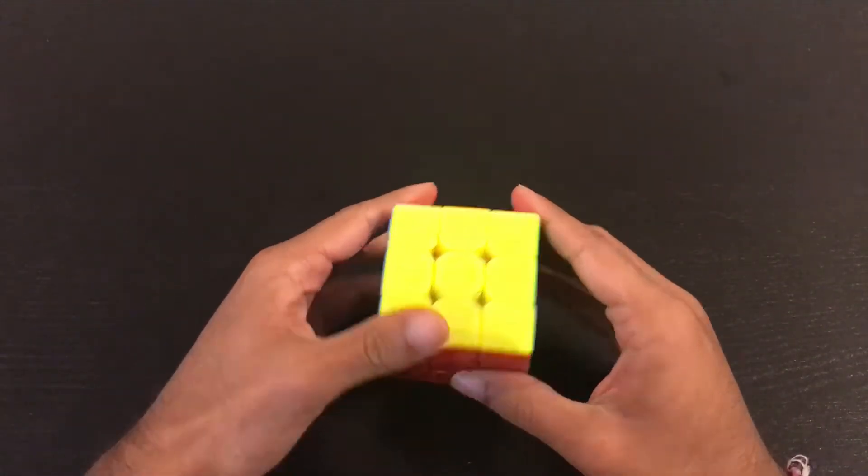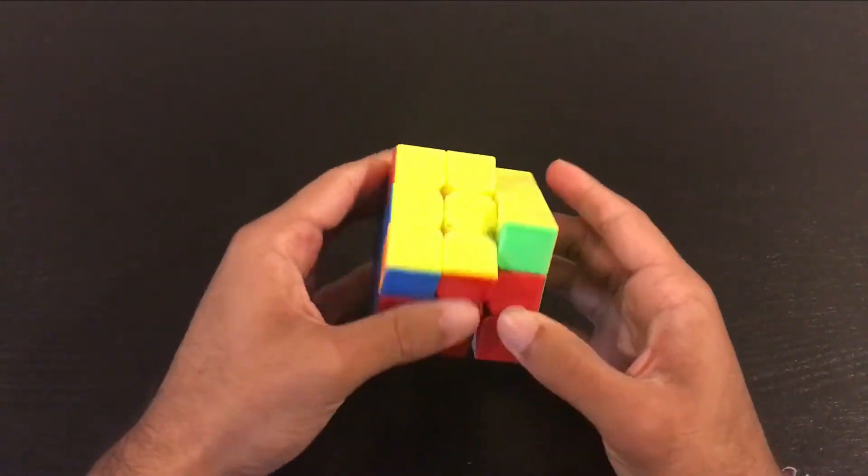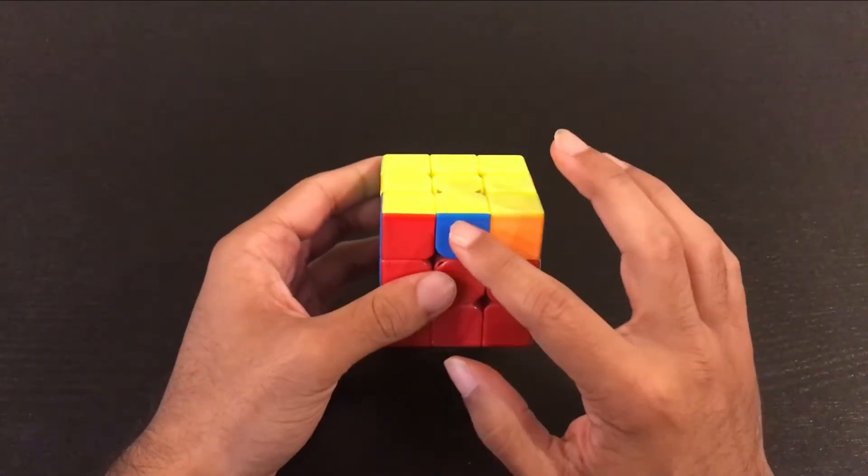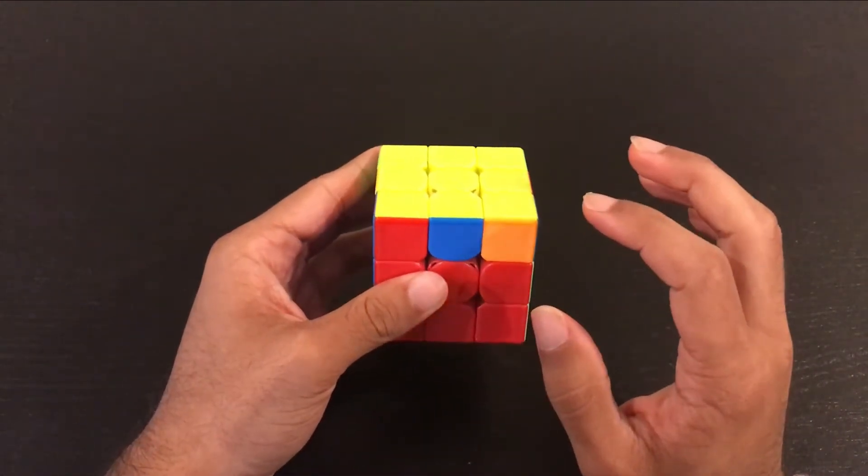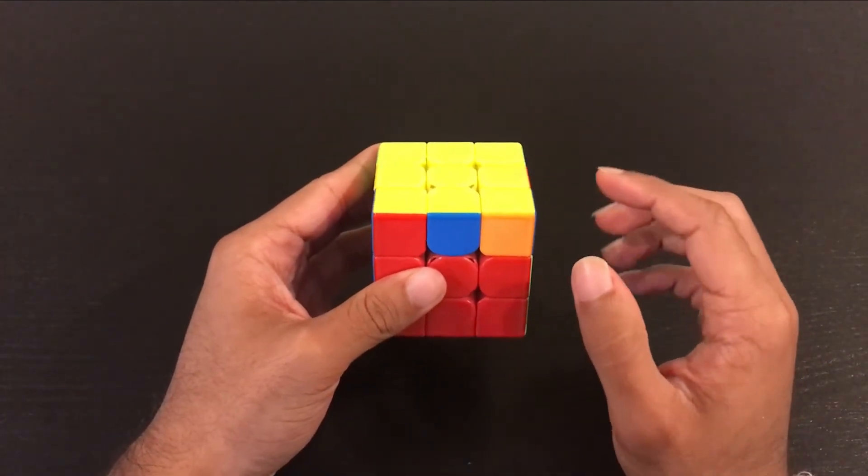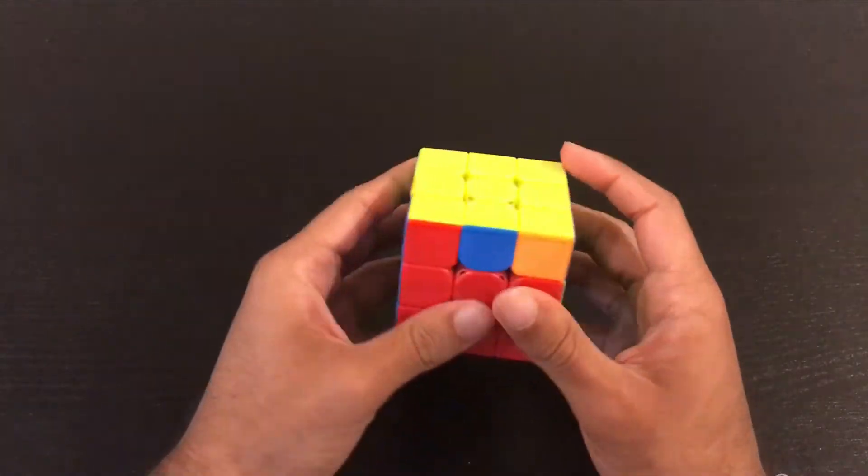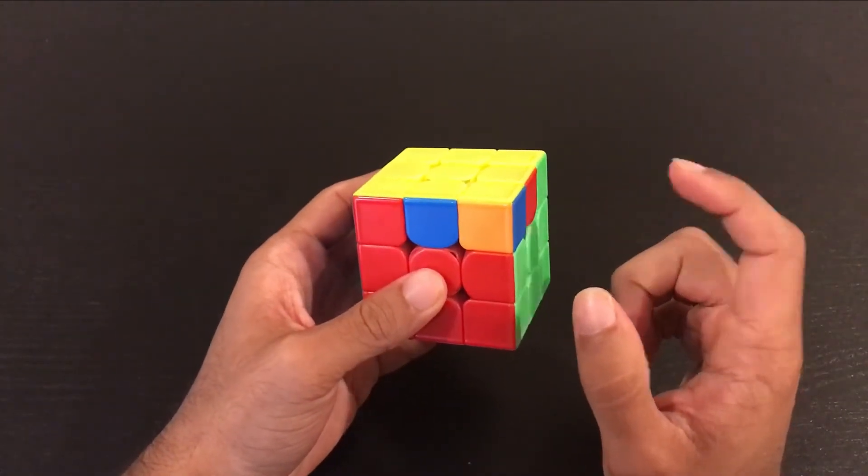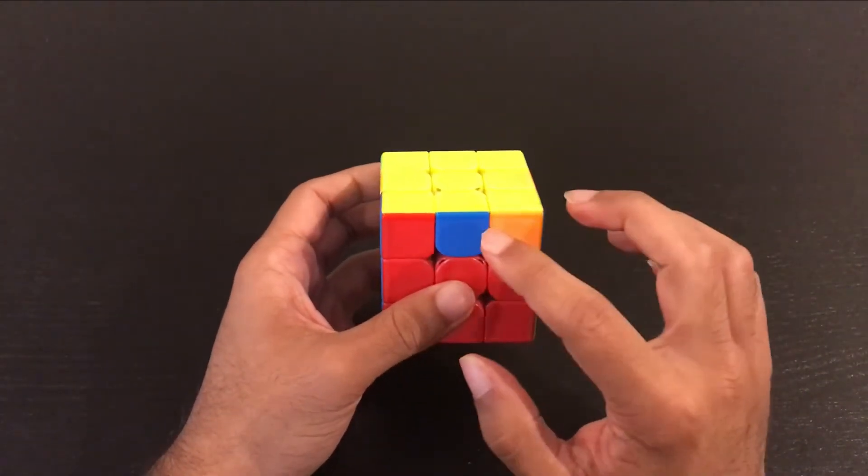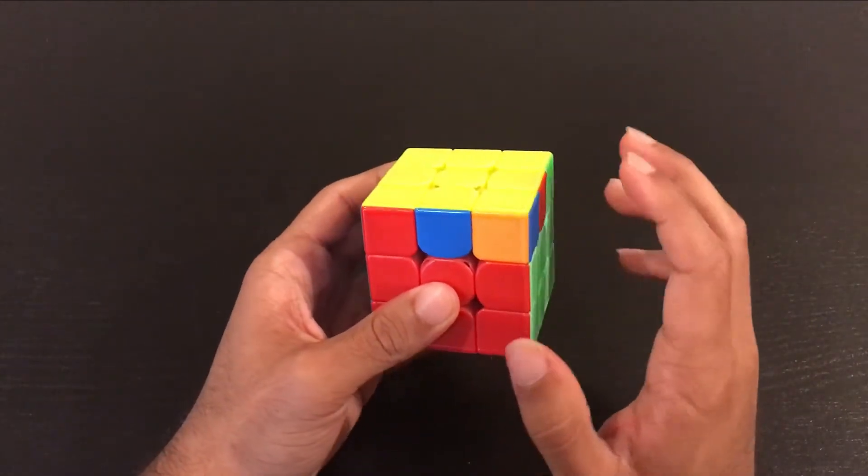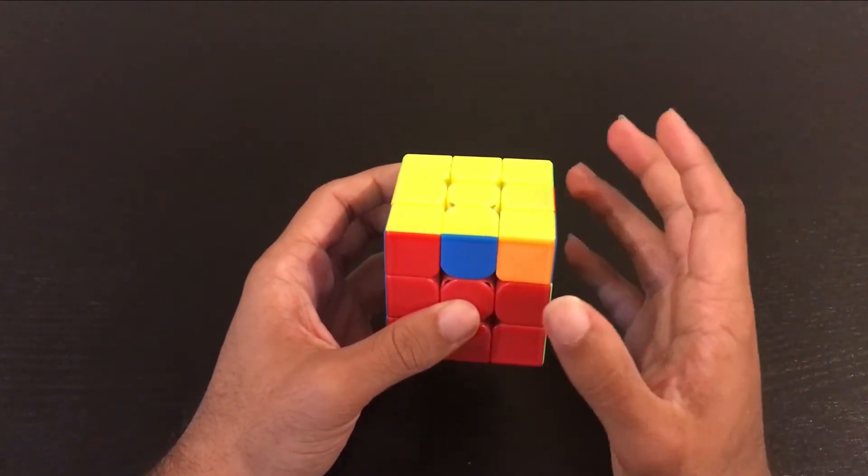So a much more efficient approach is to simply just look at the center edge piece and the adjacent corner, the further side of the adjacent corner. In this case I prefer to always use the right corner but you can also use the left. So the further side of the adjacent corner is this sticker right here and you want to see if the center edge sticker and this sticker are going to be opposite color.